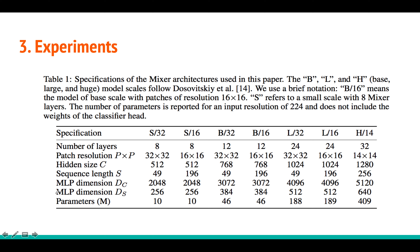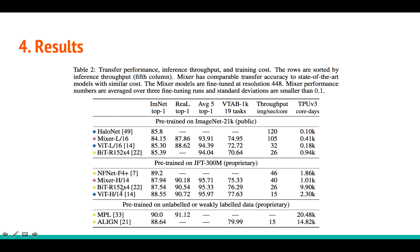In the results section, they mention different model specifications: Base, Large, and Huge models, named B, L, and H depending on the patch size, hidden size, and sequence length. These are hyperparameters I will show you one key results table, as the paper has many more detailed tables and experiments — you can check those out in the paper itself.